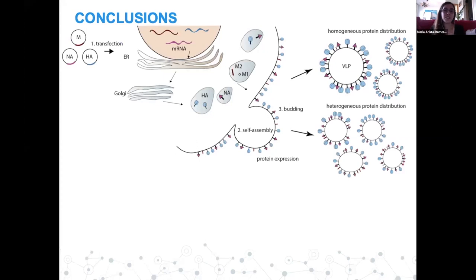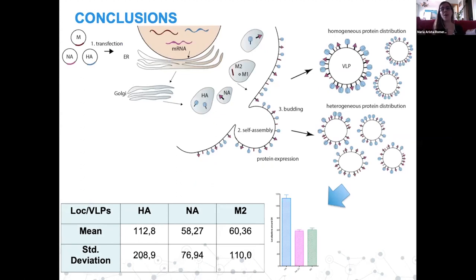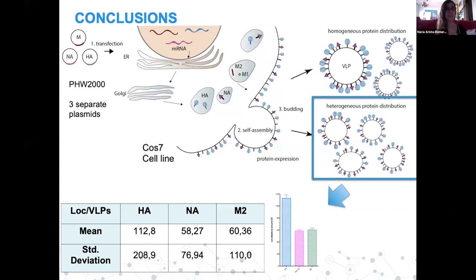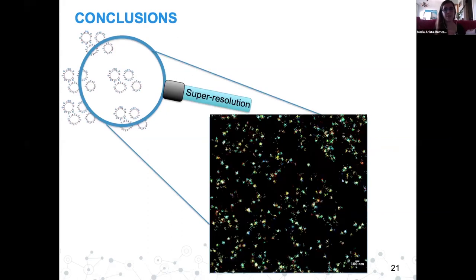The take-home message is that thanks to DNA-PAINT and super-resolution microscopy, we can monitor exactly how VLP expression is being produced — from the membrane clusters through to the released particle. We can measure at the single-particle level where the three proteins are and how they are distributed. In my case there is heterogeneous distribution, but I am using a PHW-2000 plasmid with three separate plasmids. The good thing about this approach is that you can take any population of VLPs or viruses and with super-resolution microscopy get an image of how the population looks.